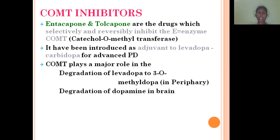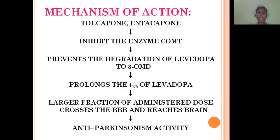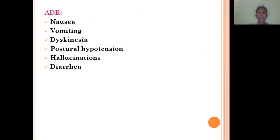COMT inhibitor — entacapone and tolcapone are selective and potent inhibitors of the enzyme catechol-O-methyltransferase (COMT). They are used as adjuvant to levodopa or carbidopa for advanced Parkinsonism. COMT plays a major role in the degradation of levodopa to 3-O-methyldopa and the degradation of dopamine in the brain. By inhibiting COMT, we can increase dopamine levels, thereby decreasing Parkinsonism symptoms. ADRs include nausea, vomiting, dyskinesia, postural hypotension, hallucination, and diarrhea.